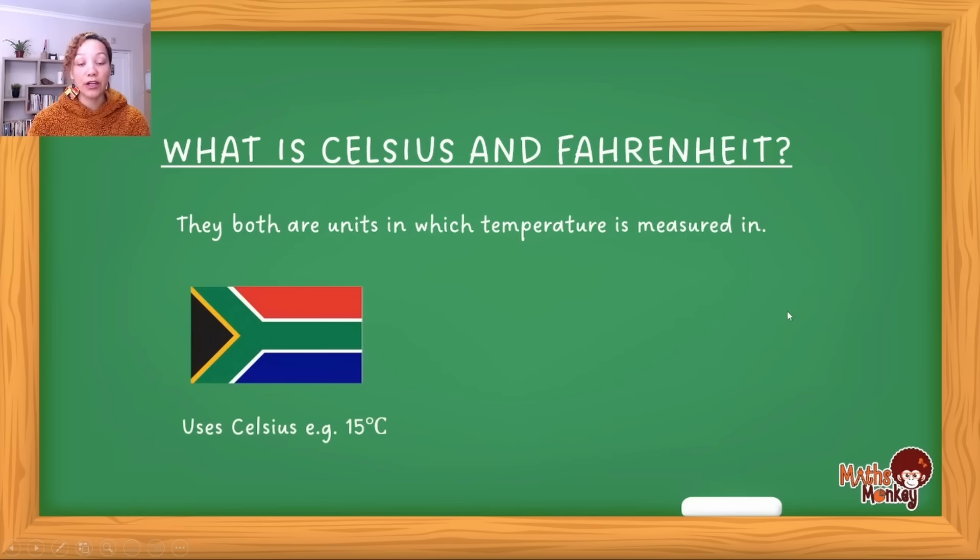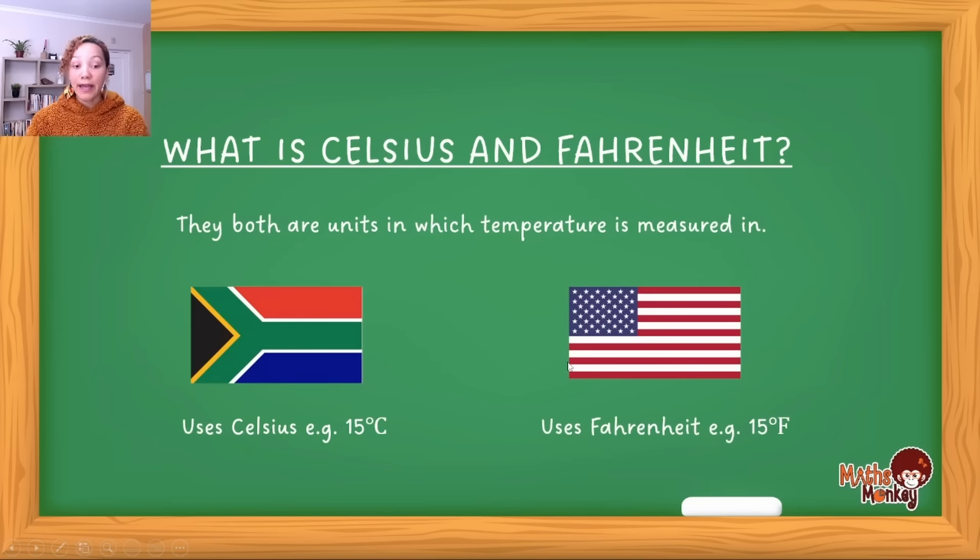Both of them are units in which temperature is measured. In South Africa, when we refer to temperature we give it in degrees Celsius. We'd say it's going to be 15 degrees Celsius, 20 degrees Celsius, or 30 degrees Celsius. But places like America use the unit Fahrenheit, measuring the same temperature but using Fahrenheit.